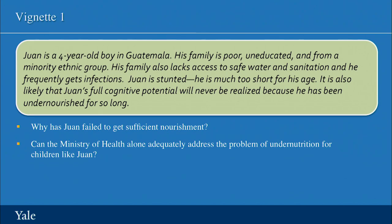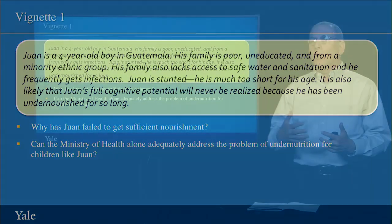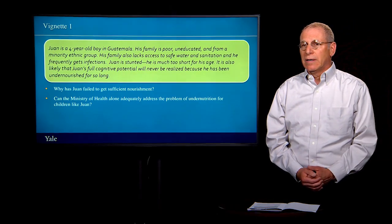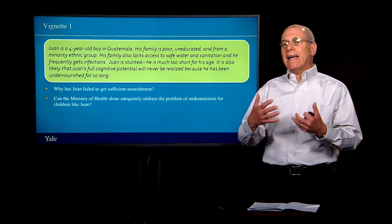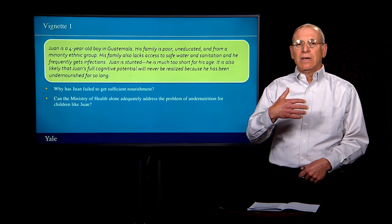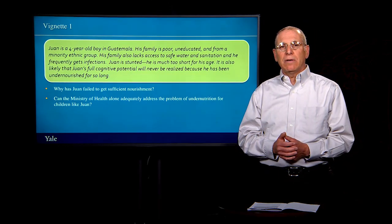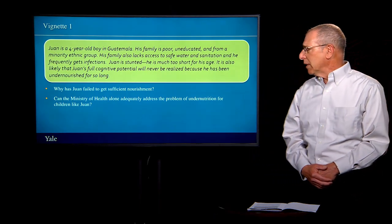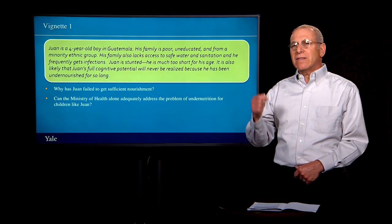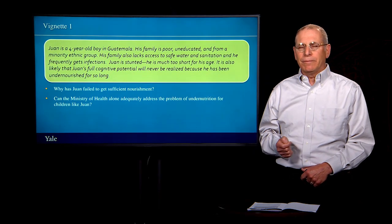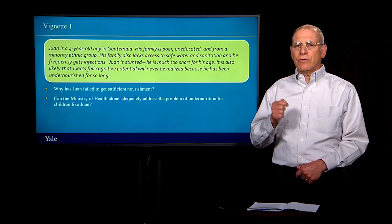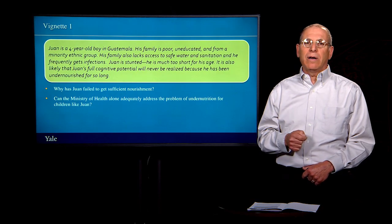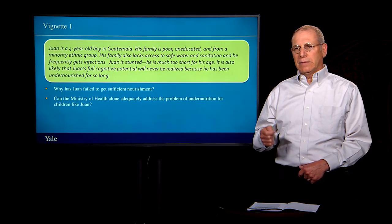Is it because his family lacks access to safe water and sanitation, so he gets diarrheal disease and can't sustain his nutrition? Is it because they're poor and he doesn't get enough nutrition in the first place? Is it because his family is poorly educated and therefore lacking in the knowledge needed to get good employment or to help ensure the good health of their family? And what's the likelihood that the Ministry of Health alone could take the measures needed to ensure that children like Juan are well-nourished, healthy, and thriving?